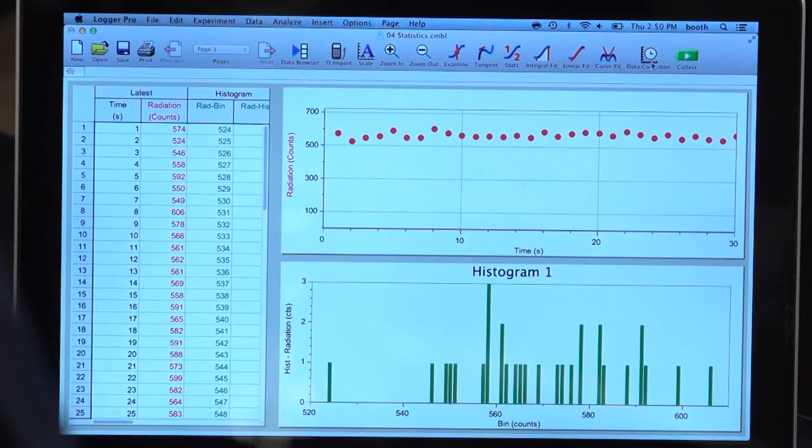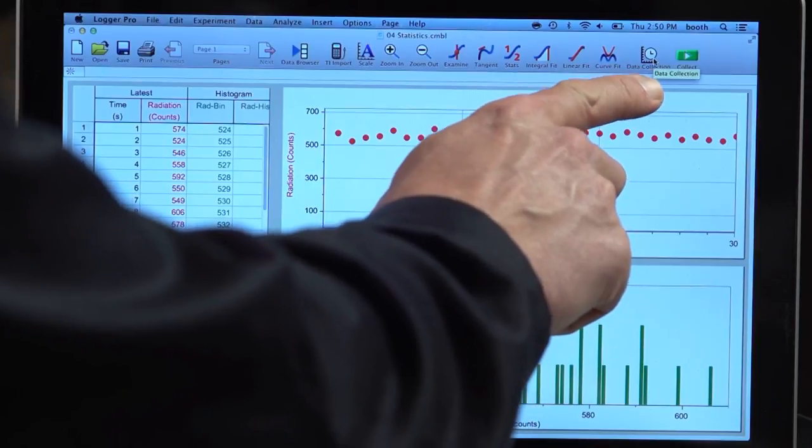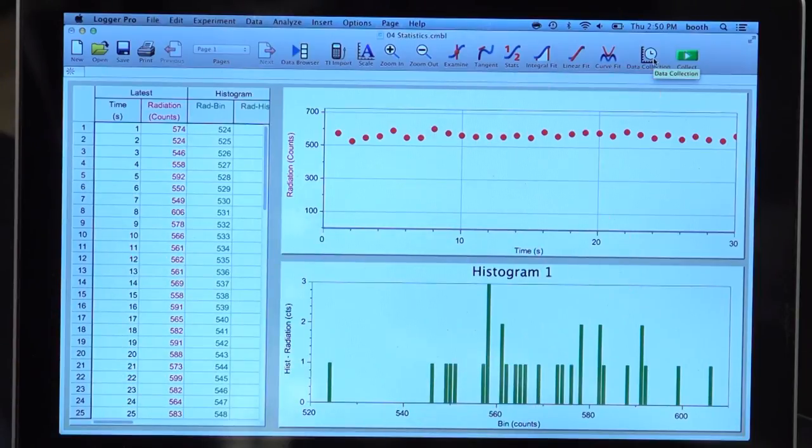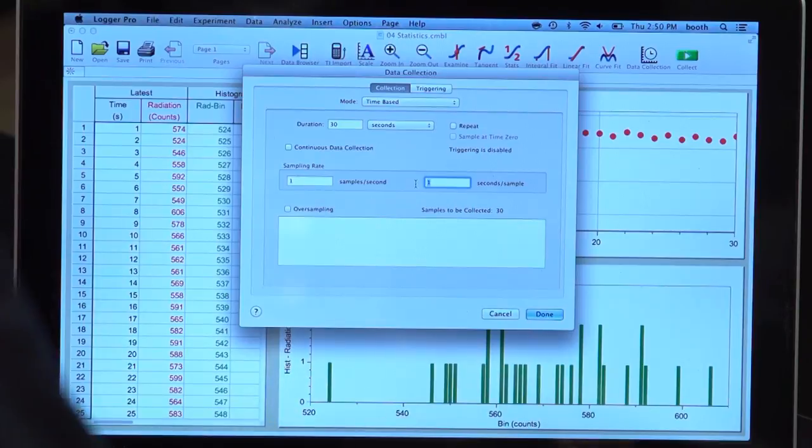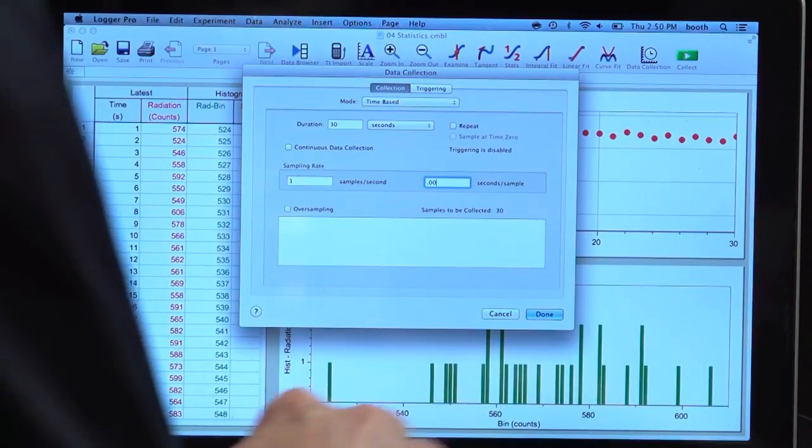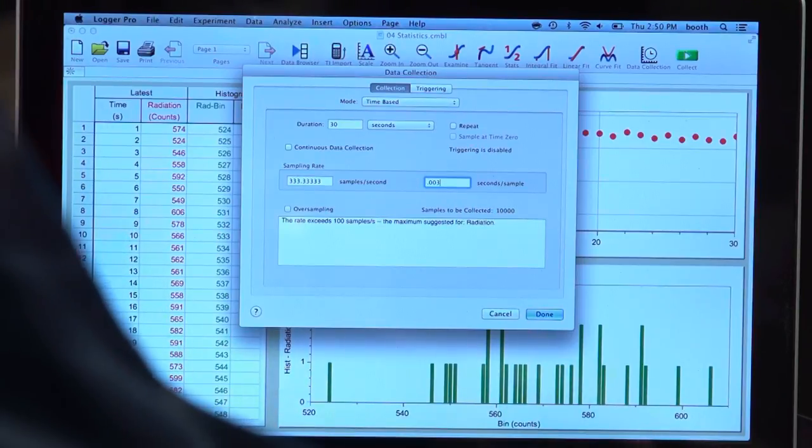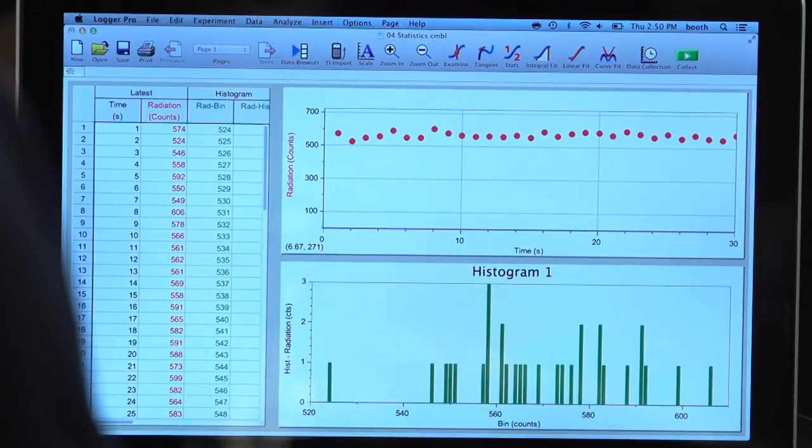To do that, I'm going to go to my data collection dialog. That is the icon right next to the Collect button that looks like a stopwatch. And you can see the seconds per sample setting is currently set to one second. I'm going to change that to 0.003, or three milliseconds, and tap OK.